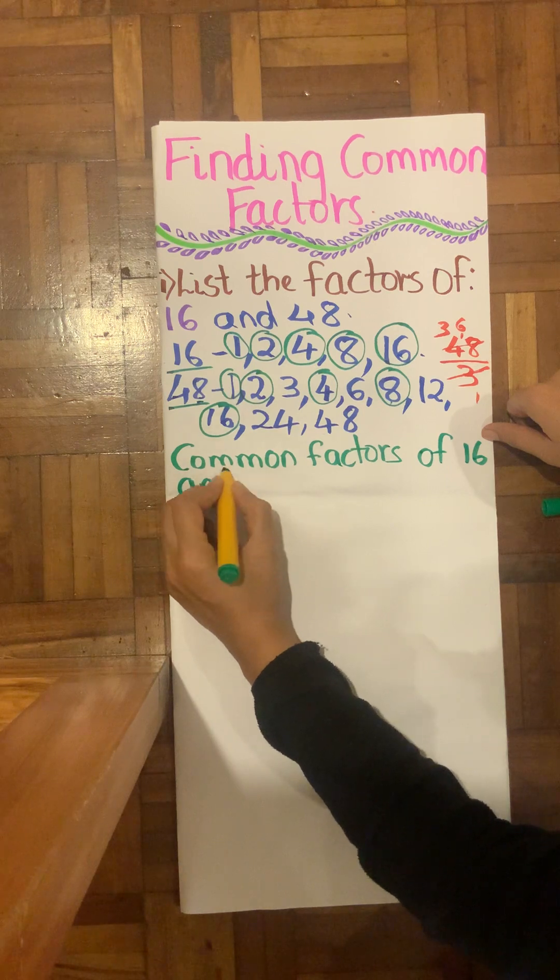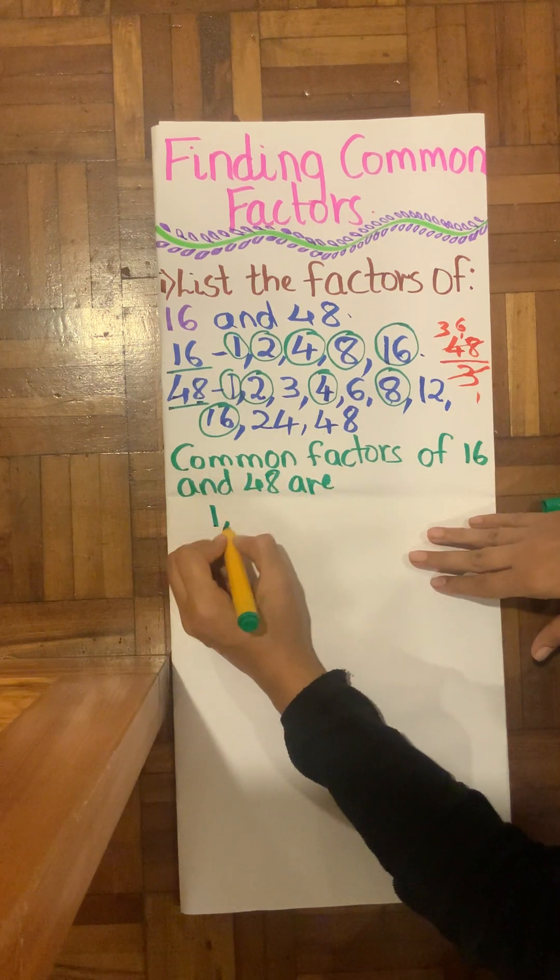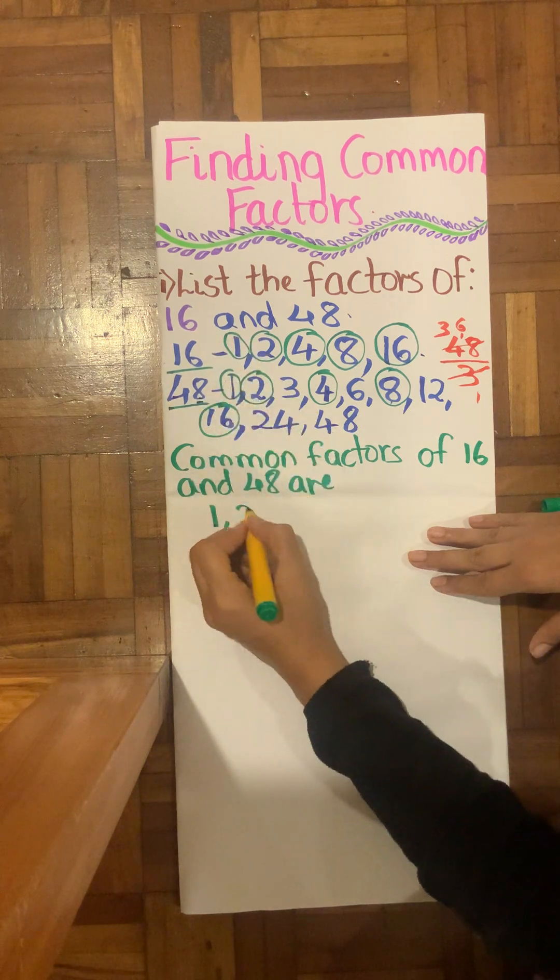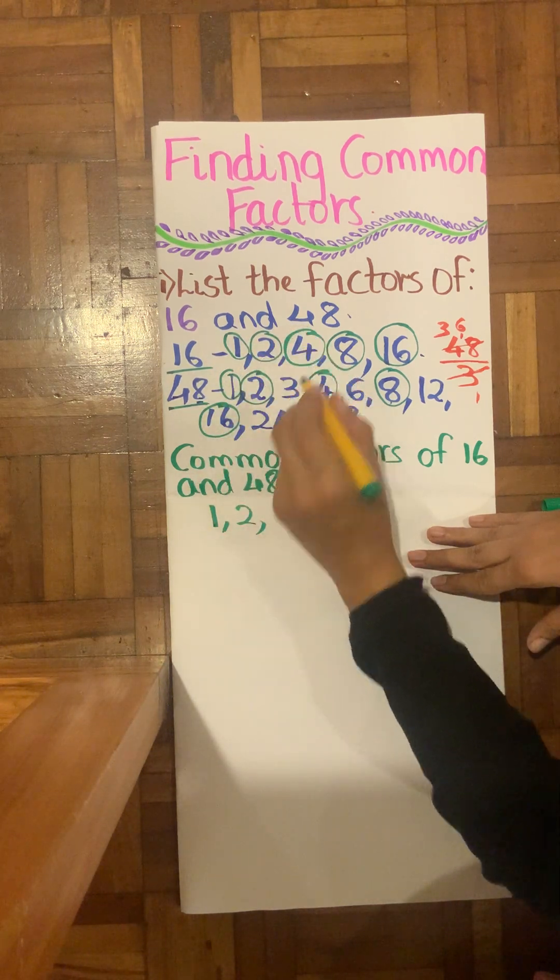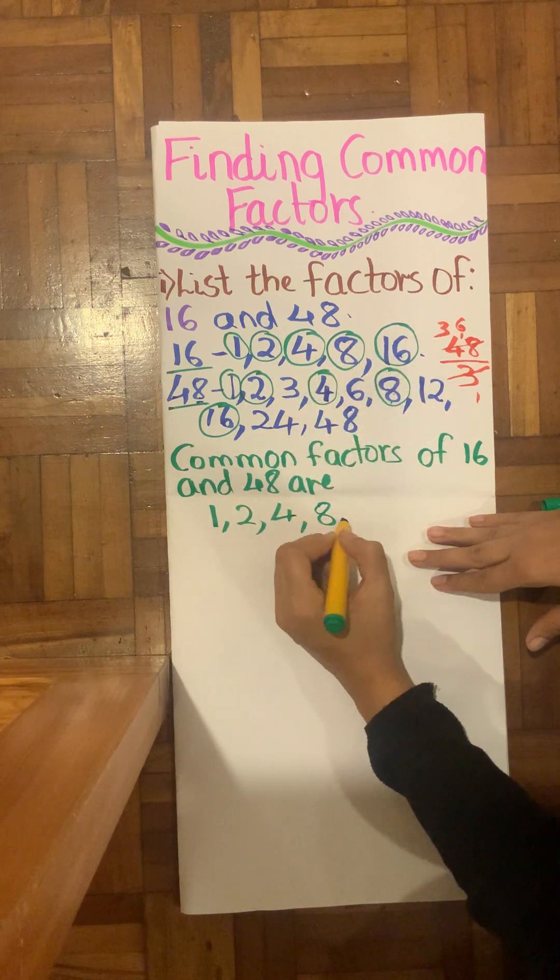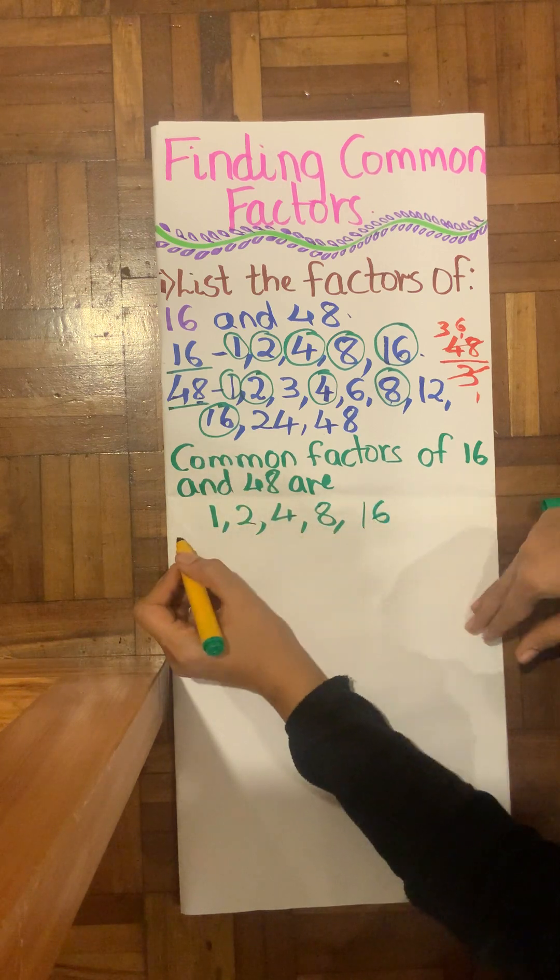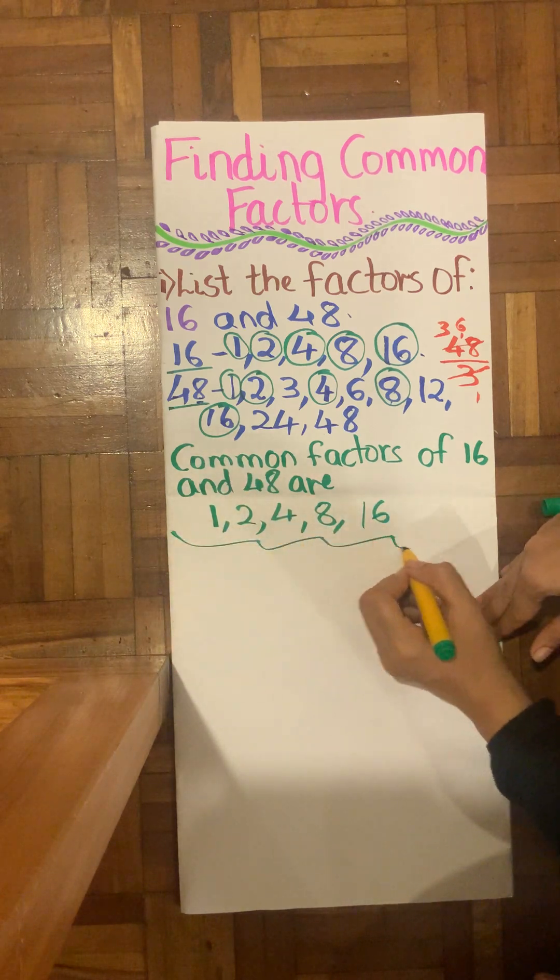Therefore common factors of 16 and 48 are 1, then I have 2, I have 4, 8, and finally I have my 16. So this is how we find the common factors.